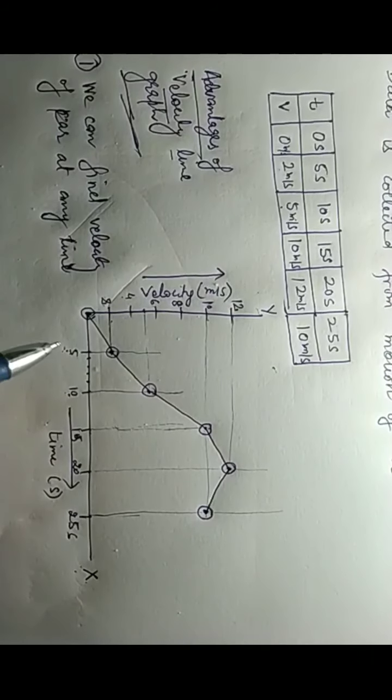For example, to find the velocity at 7 seconds: since 5 and 10 are marked, I divide that interval into 5 equal parts, so 7 falls at the second division. I draw a vertical line from 7 seconds; where it meets the graph, I draw a horizontal line. It meets at approximately 3 meters per second. So at 7 seconds, the velocity of the car is 3 meters per second.